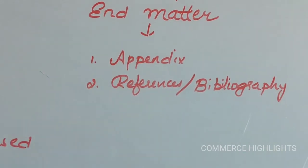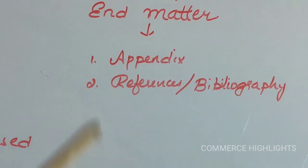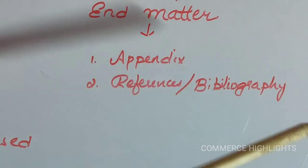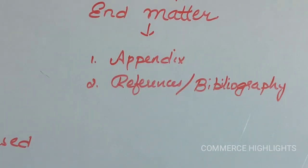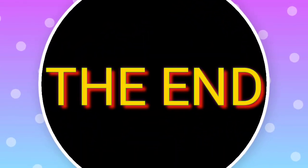The second part is references or bibliography. The researcher might have referred to various sources — internet, magazines, journals, articles, or various books. Whatever the researcher has referred to, the names and sources of those books should be indicated in the bibliography section. This concludes the discussion on the layout, structure, content, and format of a research report. Thank you.